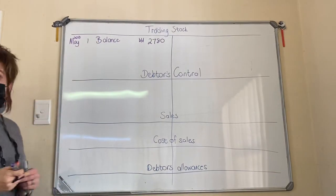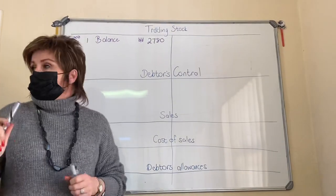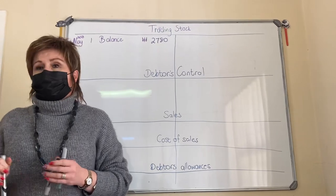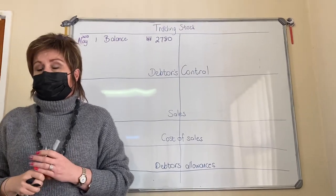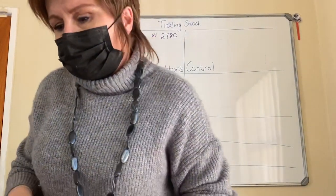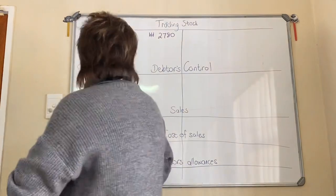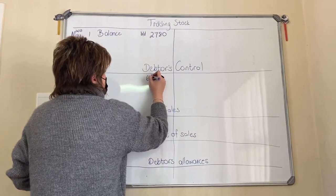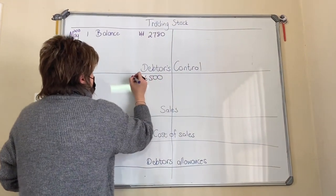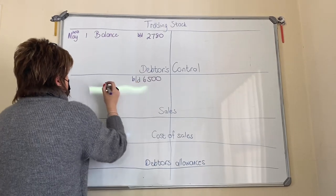That will only happen at the start of the month. We're busy with May 2018. From May the first onwards you can't use the word 'balance' again until you do your balancing procedure at the end of the month. Next one: debtors control. It's an asset. Assets have debit balances — that's what your rule says, nothing to understand.